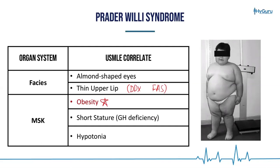It's important to integrate that further. Remember that in your vital signs, specifically when they give you the growth parameters, they will put a BMI of greater than 30. You need to take that quantitative numerical data and turn it into qualitative data — recognizing that a BMI greater than 30 refers to obesity.